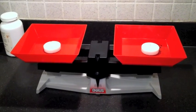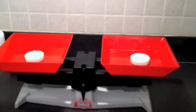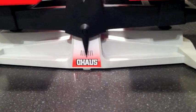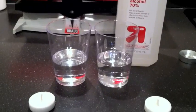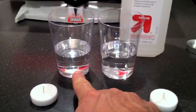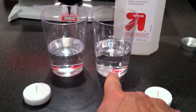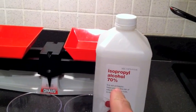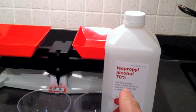Here we have two tea lights and as you can see they are of equal weight. Now we have two cups, one is filled with regular tap water, the other one is filled with isopropyl alcohol 70%.